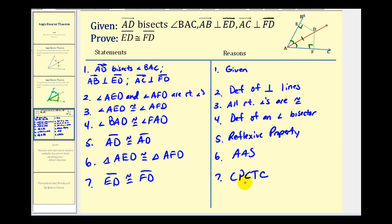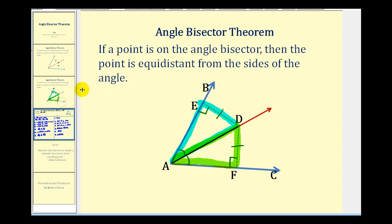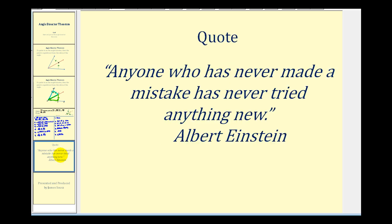If these two segments are congruent, they are the same length, which is what the Angle Bisector Theorem tells us. Any point on the Angle Bisector would be equidistant from the two sides, because from any point on the Angle Bisector we would have two congruent triangles. I hope you found this helpful.